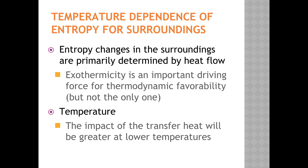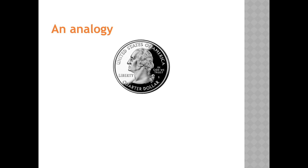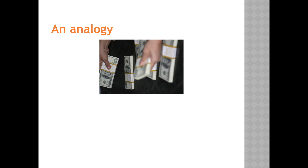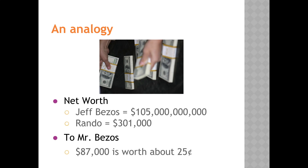To illustrate this, consider an analogy from economics. If you were walking to school and noticed a quarter on the ground, would you pick it up? Maybe. But what if it was $87,000 cash instead? In 2018, Jeff Bezos had a net worth of about $105 billion, and the average American had a net worth of about $301,000. To the average American, $87,000 is very important — but to Jeff Bezos, not so much. It would be worth about a quarter to someone that wealthy.